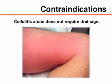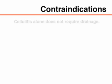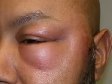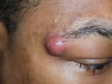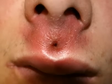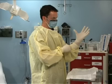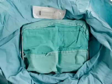Abscesses of the palms, soles, or nasolabial folds can be associated with complications and may require consultation with an appropriate specialist. Incision and drainage is not indicated for cutaneous cellulitis without an underlying abscess. The need for preoperative antibiotics for conditions such as abnormal or artificial heart valves may require reconsideration of the timing for the procedure. Input from an appropriate specialist may be important for areas of the body with cosmetic concerns because of the expected scar formation after an abscess drainage.